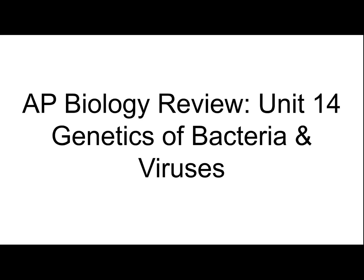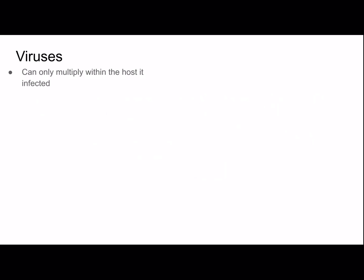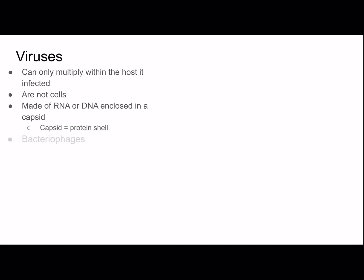This is my 14th video in my AP Biology Review Series and it is about the genetics of bacteria and viruses. Viruses can only multiply within the host they infected. They're not made of cells — they're made of RNA or DNA, which is the genetic material, enclosed in a capsid, which is a protein shell. Bacteriophages are viruses that infect bacteria, and they replicate through the lytic or lysogenic cycles, which we'll be discussing in this video.